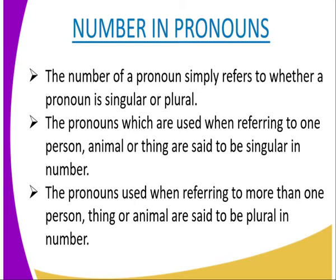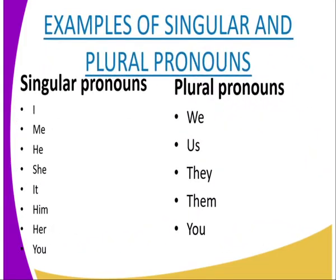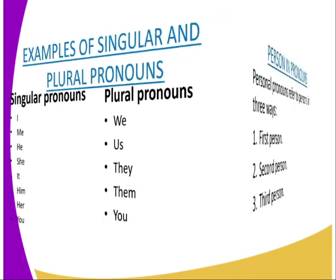Pronouns used when referring to one person, animal, or thing are said to be singular in number. When they refer to more than one, they are plural. Examples of singular pronouns include: I, me, he, she, it, him. In their plural form we have: we, they, them, and you. Note that 'you' appears both in singular and plural form.